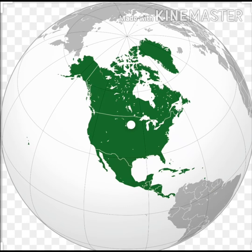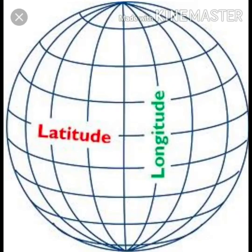First, let us understand what are longitudes and latitudes. Latitudes are slanting imaginary lines from east to west on the earth, as you can see in the picture. And longitudes are the standing imaginary lines from north to south.